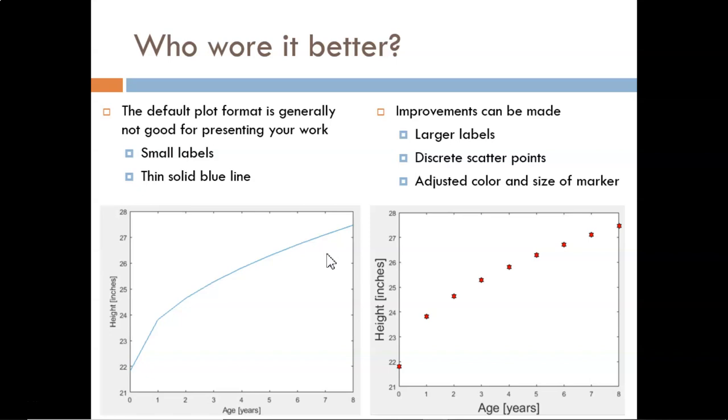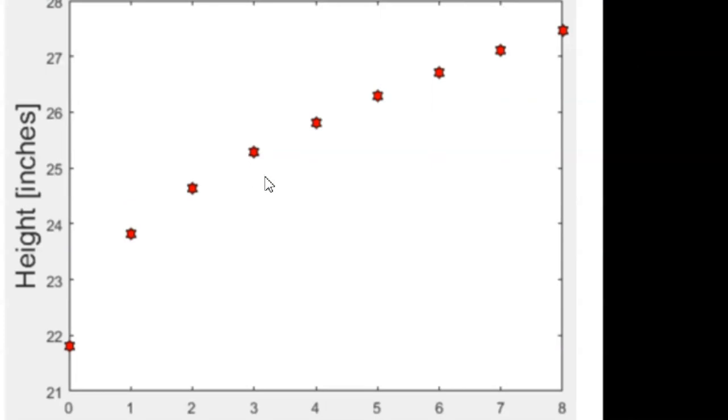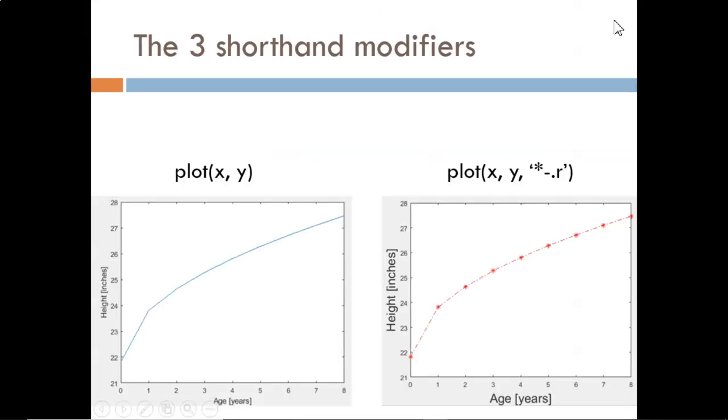Here are the modifications made to the plot on the right. First, the axes labels have a larger font size of 20. Second, discrete data points, or ordered pairs, are shown, which matches with the actual data collected. Third, the scatter points have increased in size, are now six-pointed stars, and filled in red. How can we make these sorts of changes?